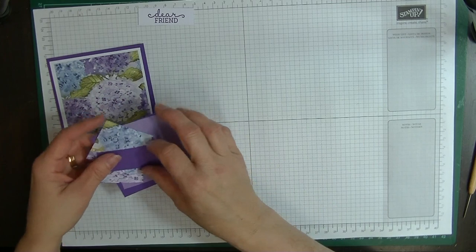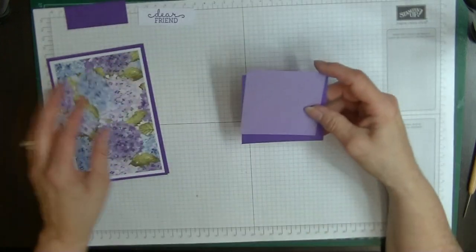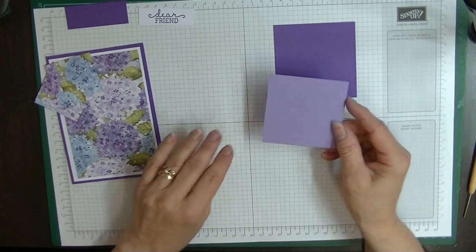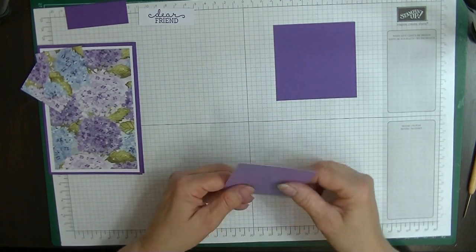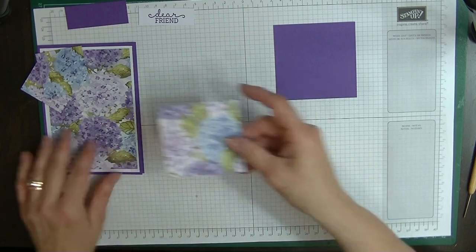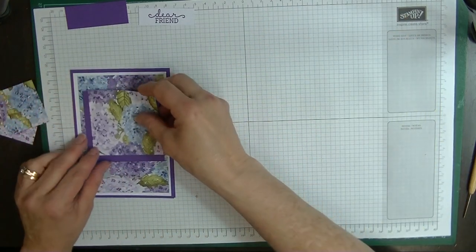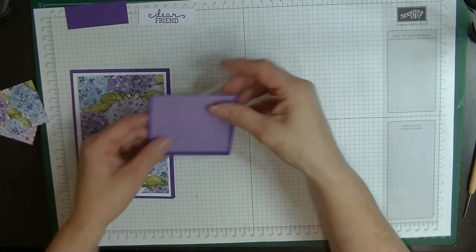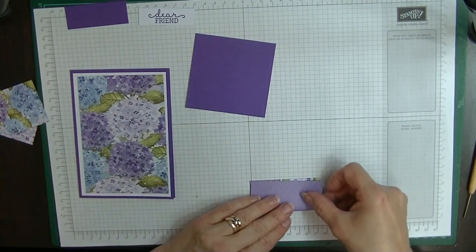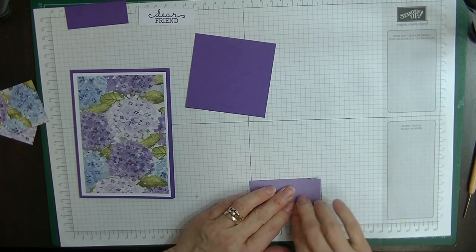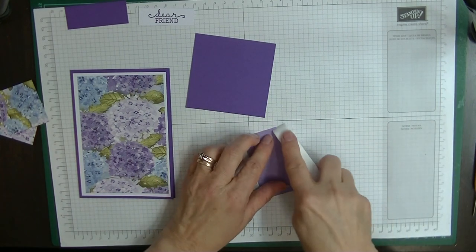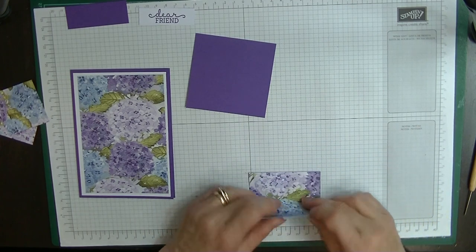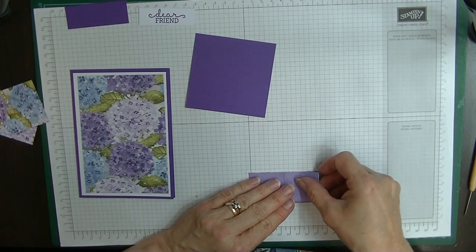That can sit on the side and just dry for a moment while we do the rest of our card. For the rest of our card, what we're going to do is we're going to actually take this piece of the three by three and we're going to fold it. Depending on which side you want, I think it would look too busy with this side showing, so I'm going to have this to contrast it. I'm going to fold this in half.